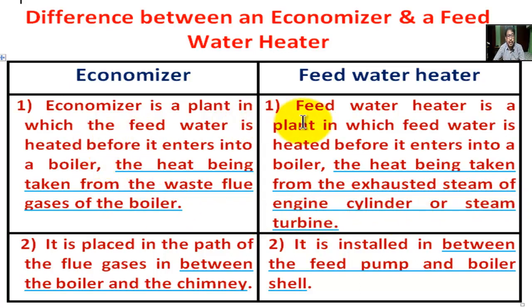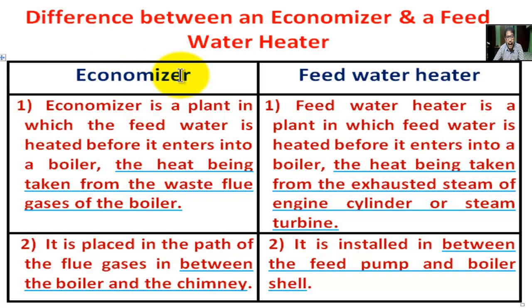Considering the function of an economizer and a feed water heater, there is no difference between them. The function of both the economizer and feed water heater is to heat the boiler feed water before it enters into the boiler.